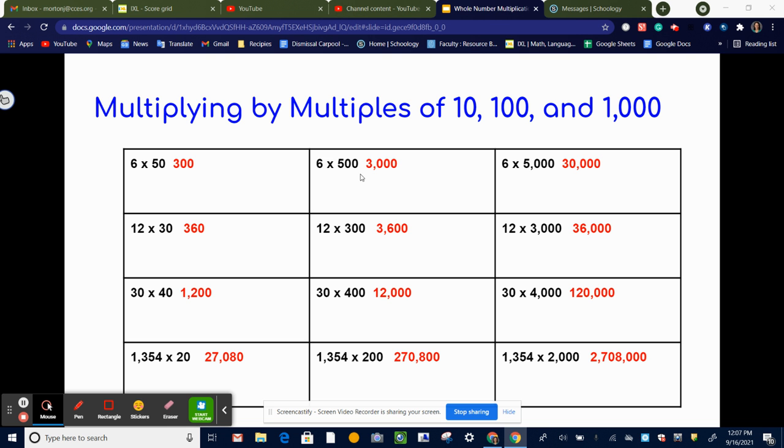So here we're going to do the same thing. The same pattern applies, but this time we're multiplying by 500. So we're going to multiply 6 times 5, which is 30, and then we're just going to add on two more zeros, so we get 3,000.